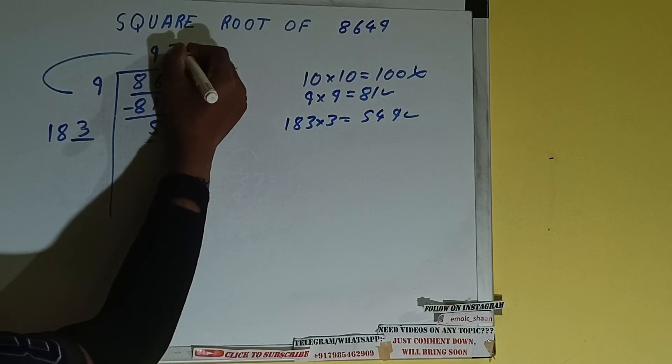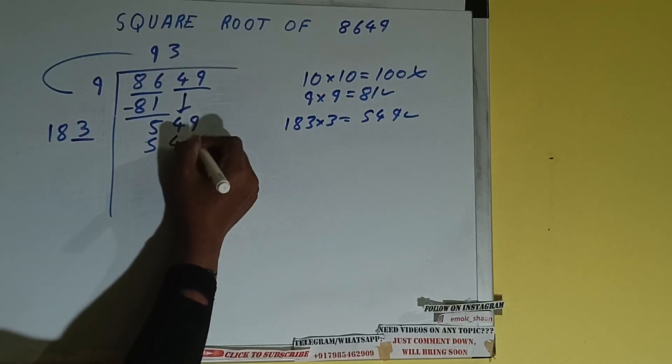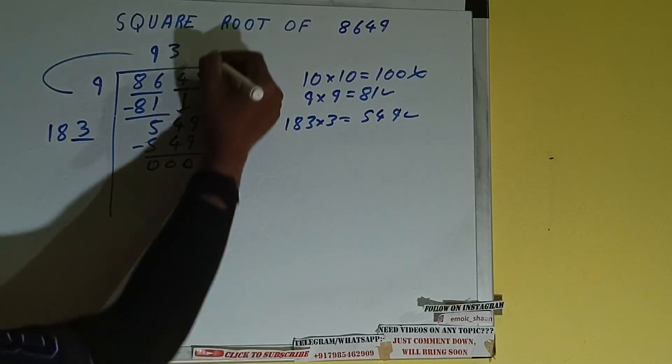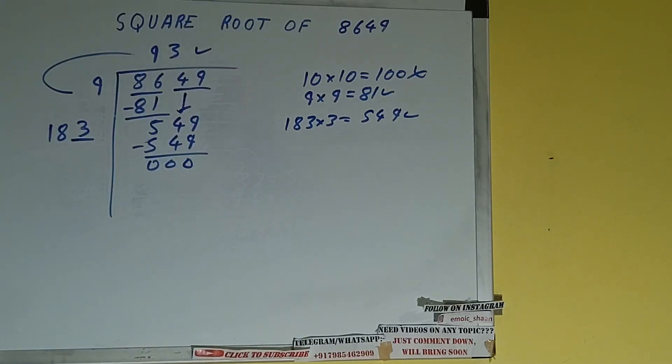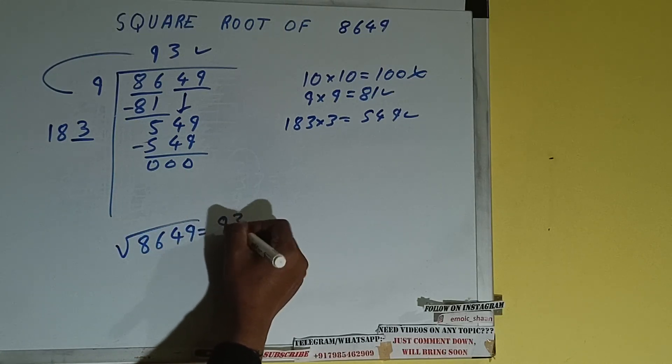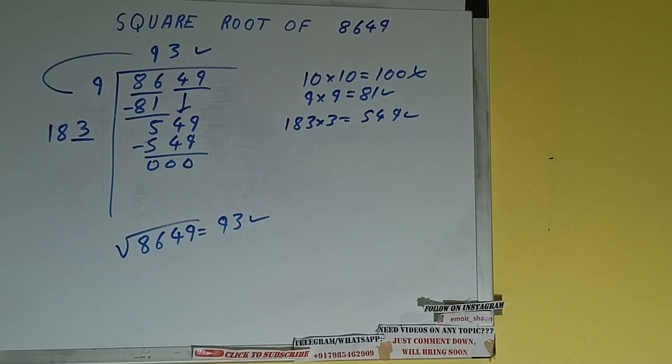Subtract, 0 will be left. Once we get 0, whatever is in the quotient will be the answer, that is 93. So square root of 8649 will be 93. That's all. So this is all about square root of 8649.